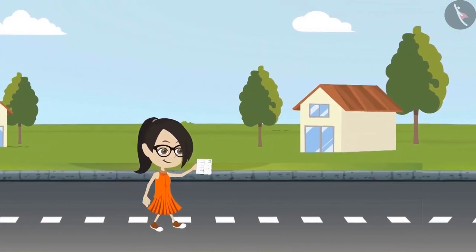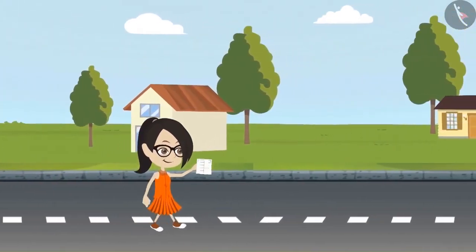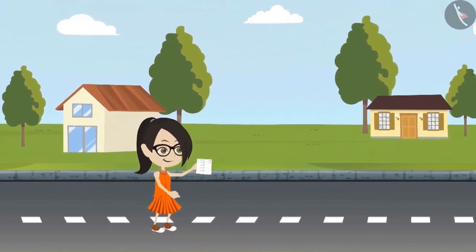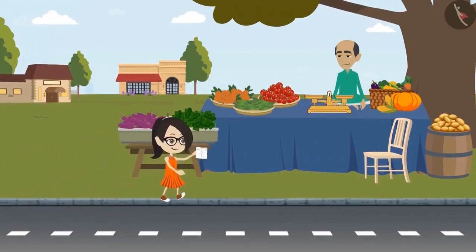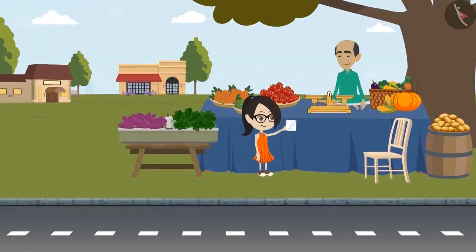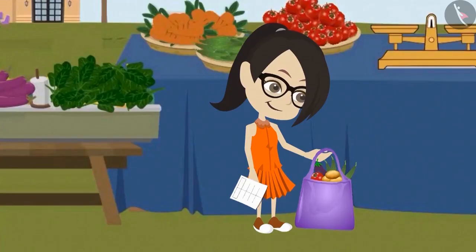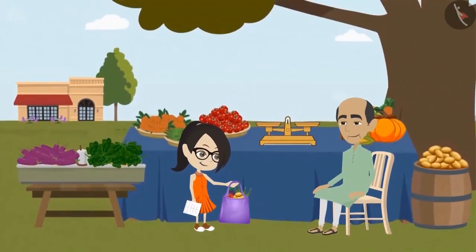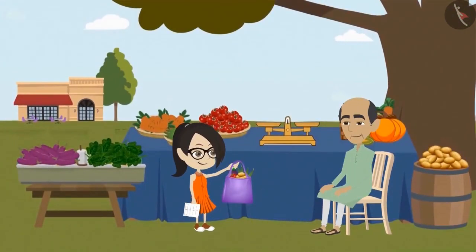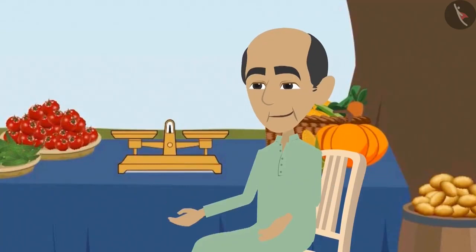Vandana is going to buy vegetables all by herself from the market today. She has created a list of all the vegetables she has to buy. She has reached the vegetable shop, bought all the vegetables on the list, and now has to pay the vegetable seller. She asked how much it all costs, and he immediately told her that all the vegetables were worth 67 rupees.